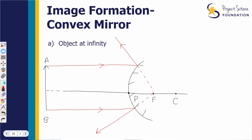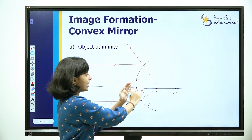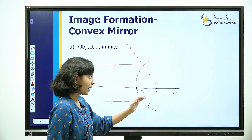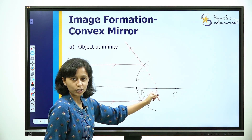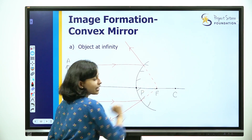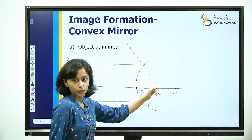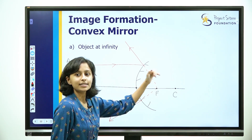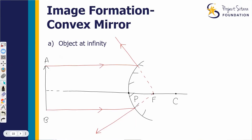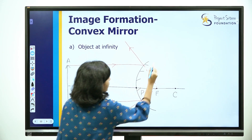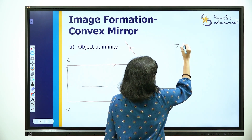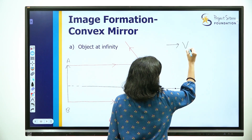Are the reflected rays actually meeting? We have extended them to meet. That means we have a virtual image formed at the focus — it is a point-sized image formed at the moment. This is a point-sized, diminished image. Let's note the image properties. The first property is that it is a virtual image.